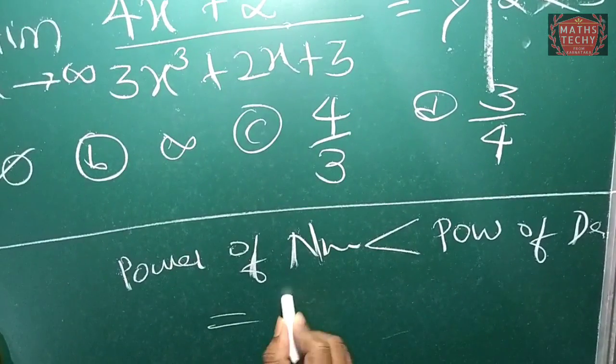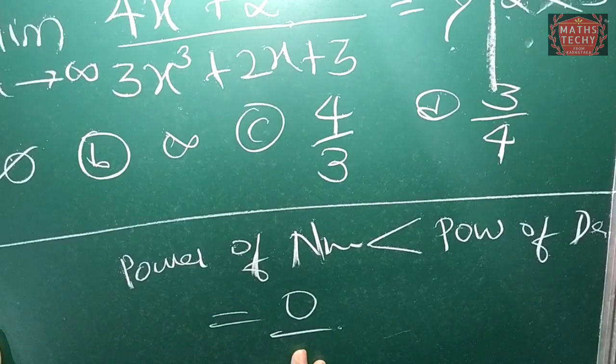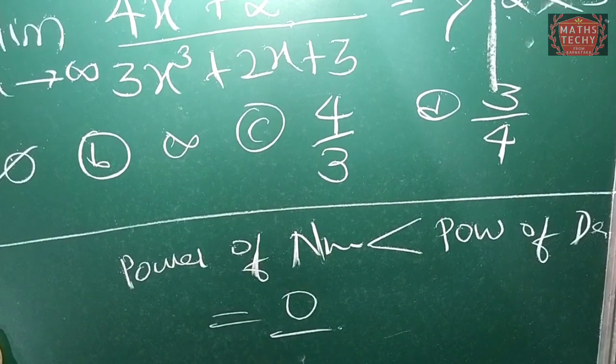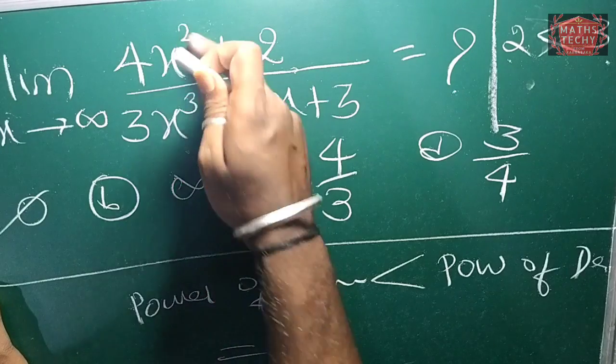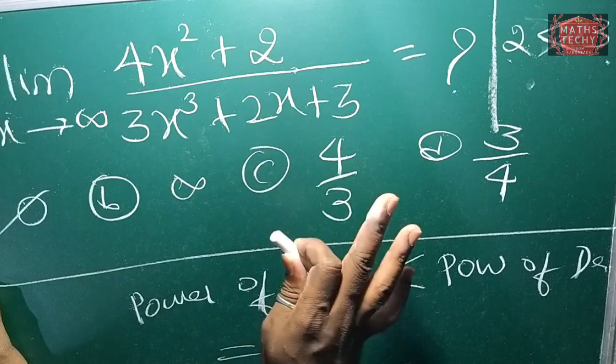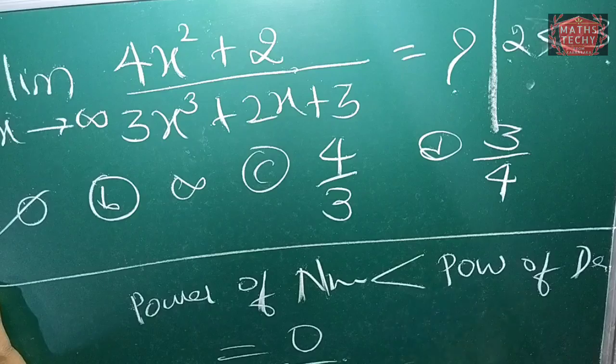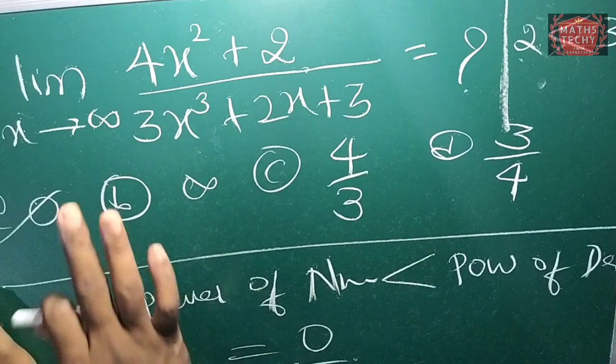So you have to remember this: if the power of numerator is less than the power of denominator, then the answer will be zero.